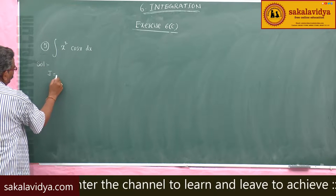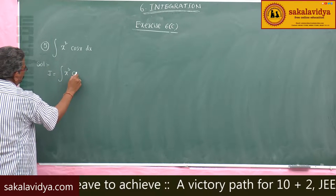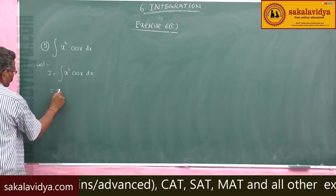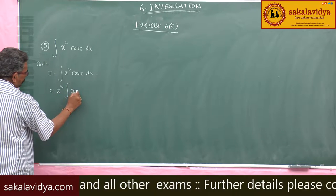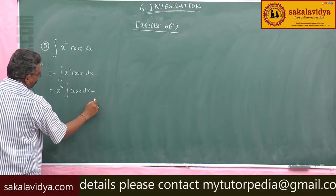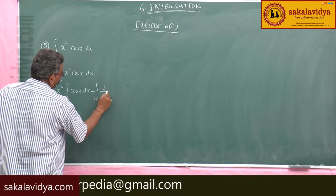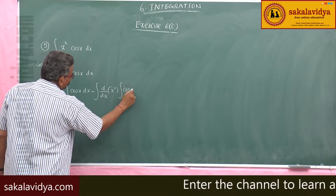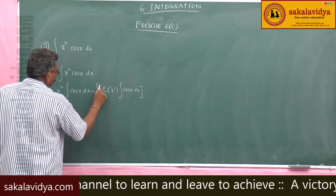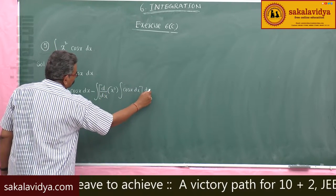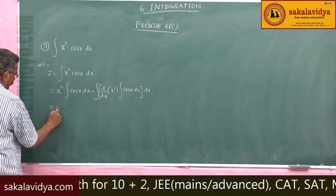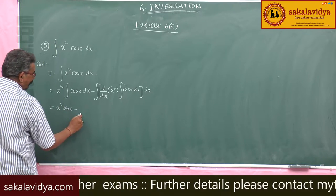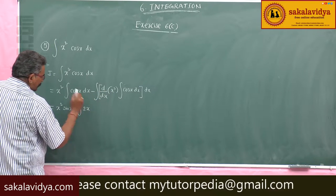I is equal to integral of x² cos(x) dx. Here x² is the first function, and we apply integration by parts: x² times the integral of cos(x) dx, minus the integral of d/dx of x² times the integral of cos(x) dx, all times dx.